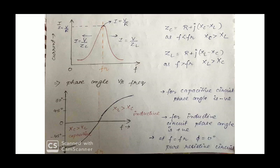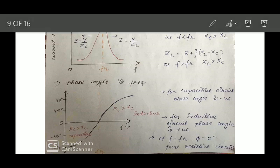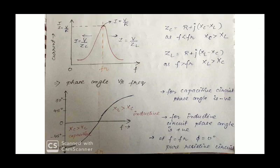Plotting phase angle versus frequency: for frequencies lower than the resonant frequency, the circuit behaves as a capacitive circuit — XC is greater than XL — so the phase angle is negative, with a maximum negative phase angle of minus 90 degrees. For frequencies higher than the resonant frequency, XL is greater than XC, giving a positive phase angle with a maximum of plus 90 degrees for a pure inductor. At the resonant frequency, the phase angle is 0 degrees — a pure resistive circuit.